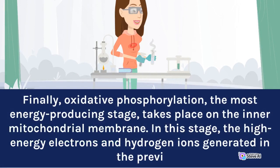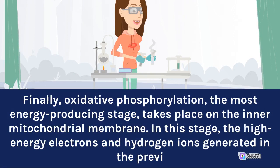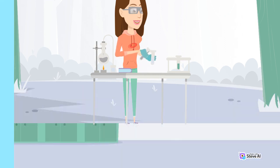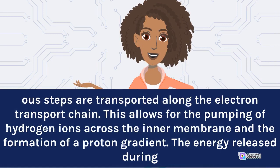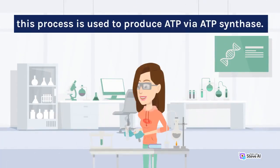Finally, oxidative phosphorylation, the most energy-producing stage, takes place on the inner mitochondrial membrane. In this stage, the high-energy electrons and hydrogen ions generated in the previous steps are transported along the electron transport chain. This allows for the pumping of hydrogen ions across the inner membrane and the formation of a proton gradient. The energy released during this process is used to produce ATP via ATP synthase.